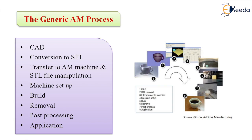Then we have the machine setup for this additive manufacturing process. Then we make the part. There are certain post-processing steps we have to follow, and then we use that part for the application. These are the steps involved in generating an additive manufacturing product.